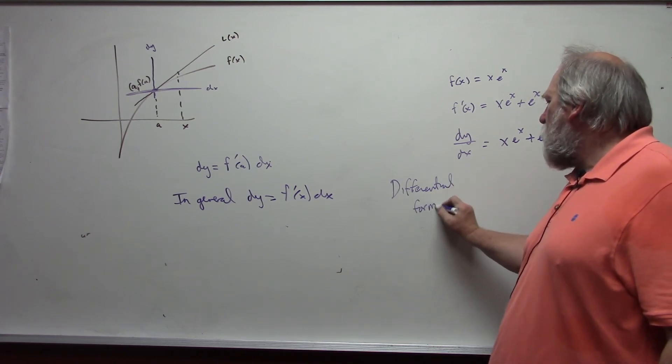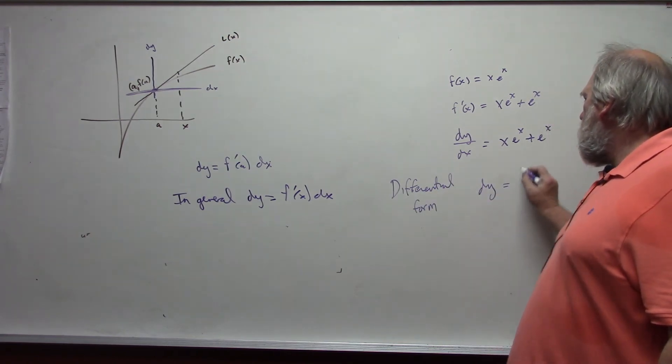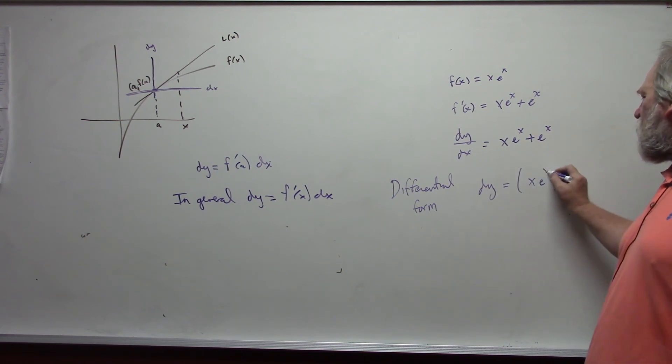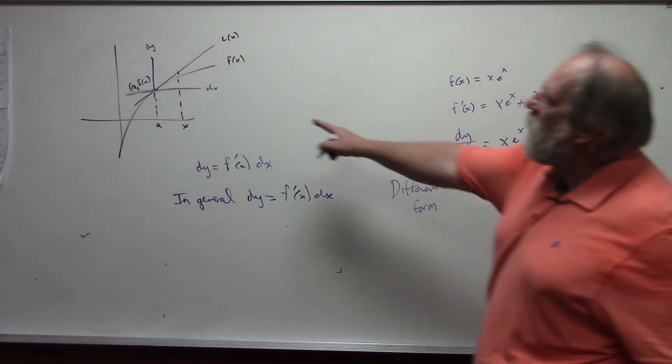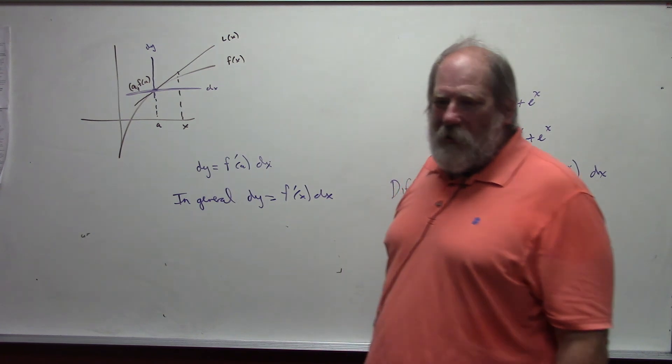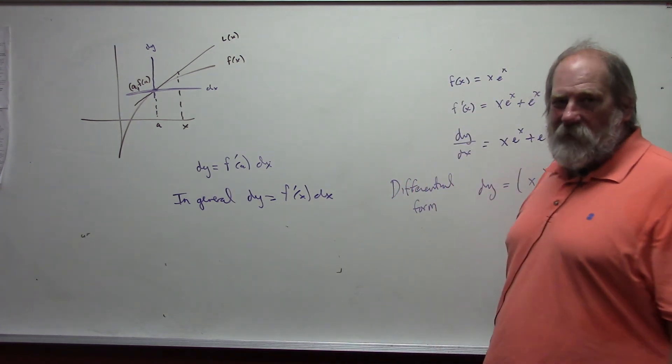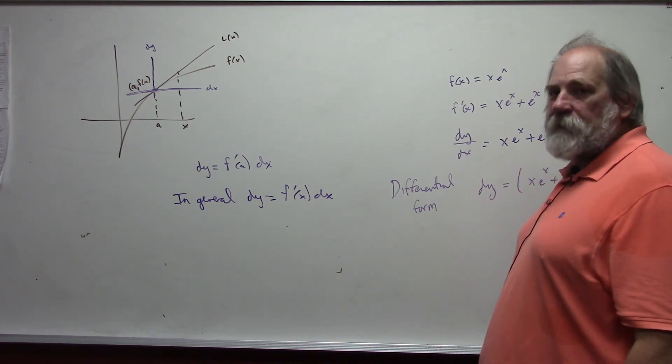Dy, we can say this being the derivative, the differential form of the derivative: dy is equal to x e to the x plus e to the x times dx. We kind of just break this apart and think of this as a fraction. And in reality, what we're doing is changing our axis to form a new axis.